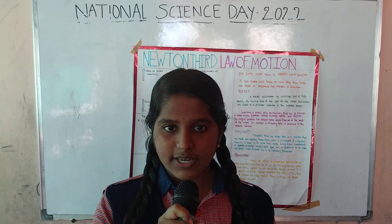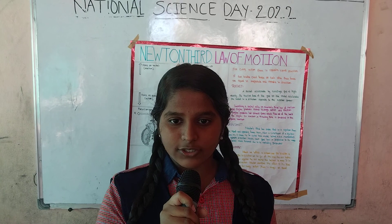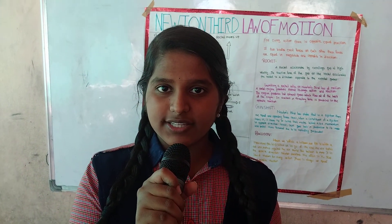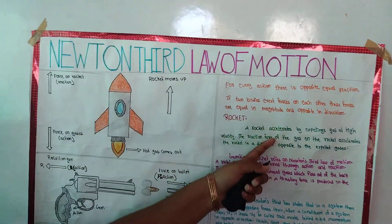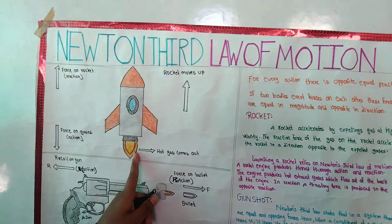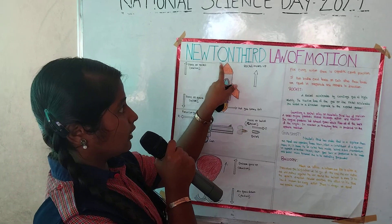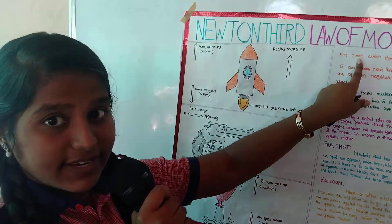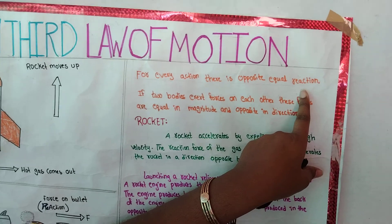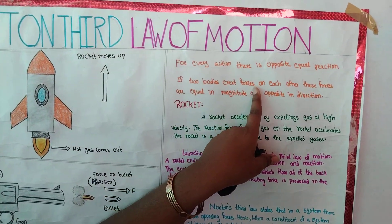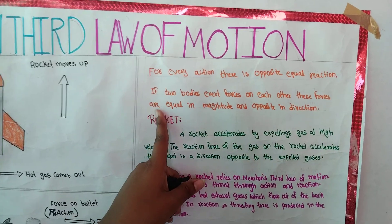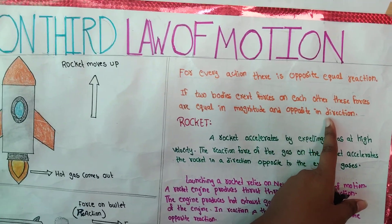Good morning, guys. My name is Shubhashya. I am studying in ninth class. We are celebrating National Science Day in our school. Today is 28th February. My project work is Newton's Third Law of Motion. For example, in a rocket, hot gas comes out. Newton's Third Law states: for every action, there is an equal and opposite reaction. If two bodies exert force on each other, these forces are equal in magnitude and opposite in direction.